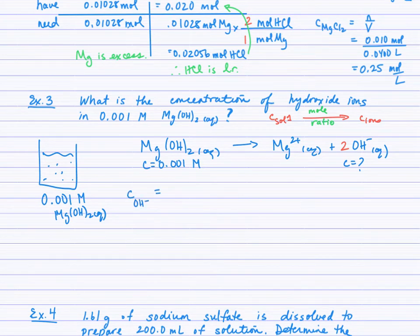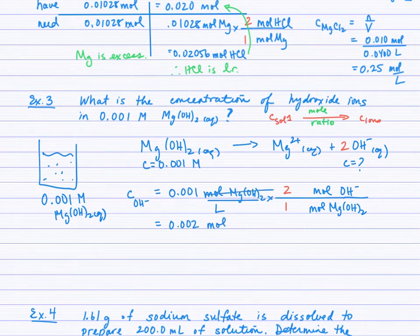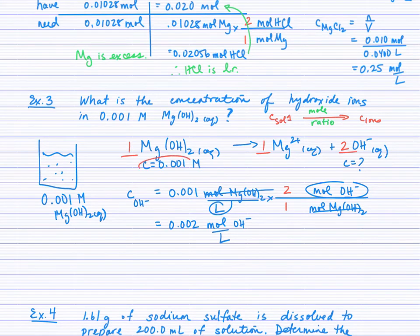For the concentration of hydroxide ions, start with 0.001 mol/L of magnesium hydroxide. Using the mole ratio of magnesium hydroxide to hydroxide ions — 1 to 2 — we simply double the concentration. The moles of magnesium hydroxide cancel, leaving moles of hydroxide per liter. So the ratio is 1 to 1 to 2: magnesium ion concentration equals the original concentration, and hydroxide ion concentration is double it. That's the quickest type of solution stoichiometry question — no chemical change, just describing the dissolved ions.